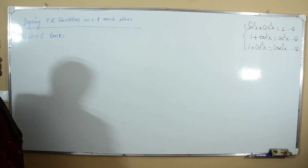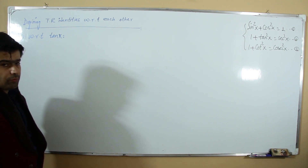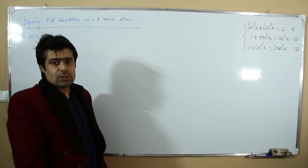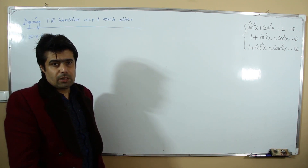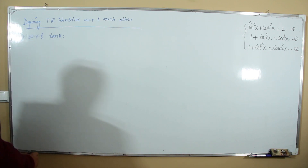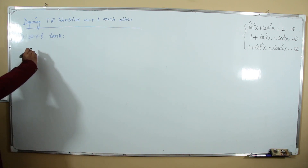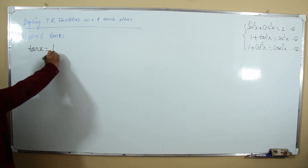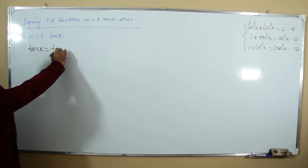With respect to tangent, we have to prove all trigonometric ratios. First, define tangent: tangent in terms of tangent is tangent.